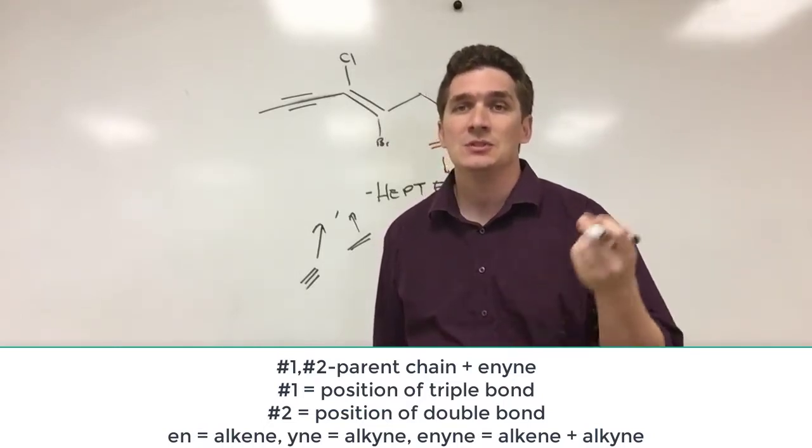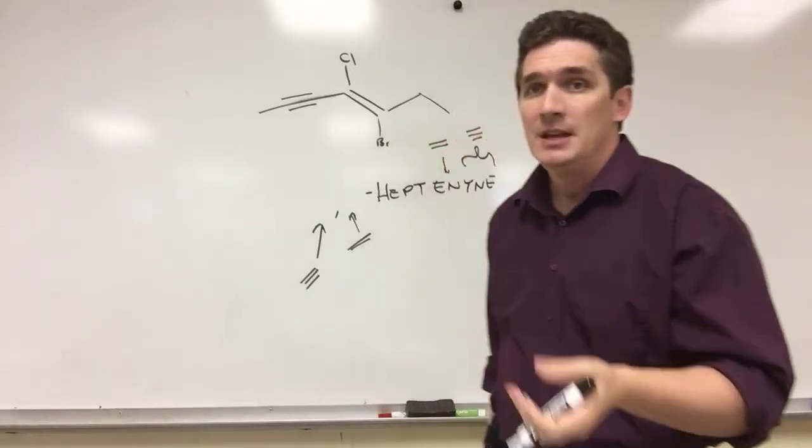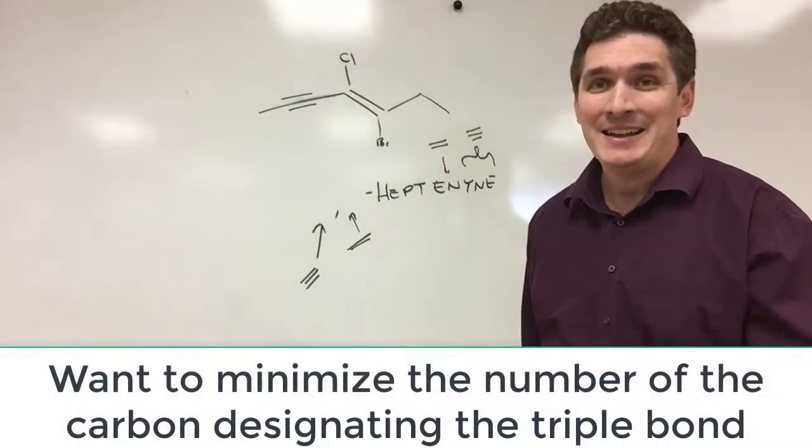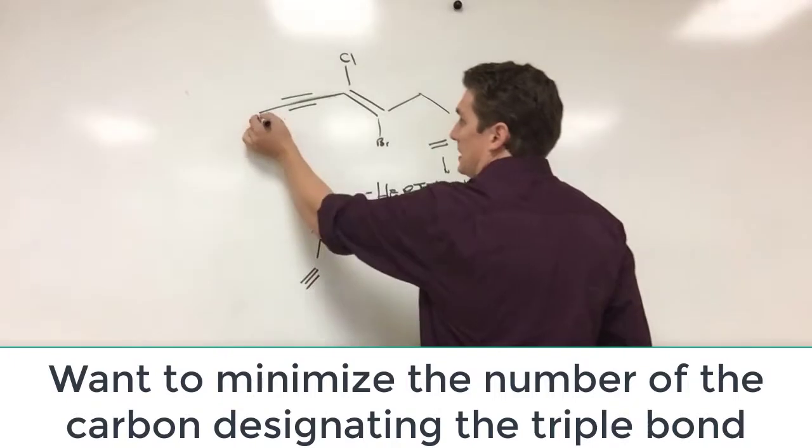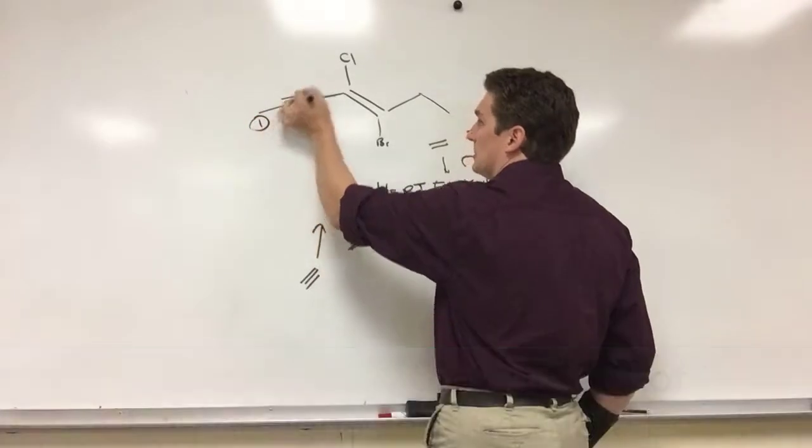We need to prioritize the position of the triple bond first. If we do have this enyne, we're going to start by numbering the position closest to the triple bond.